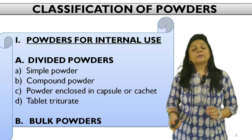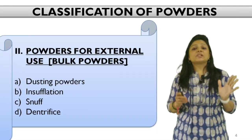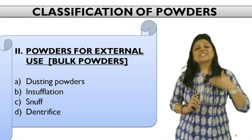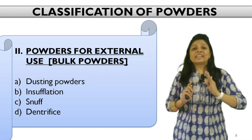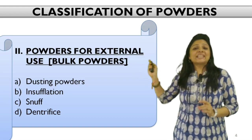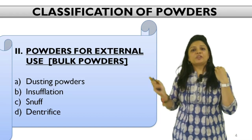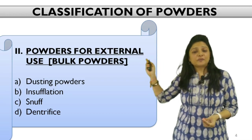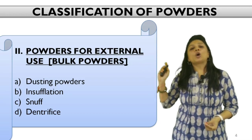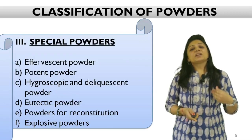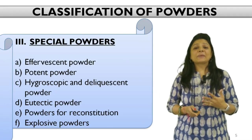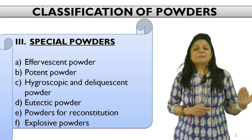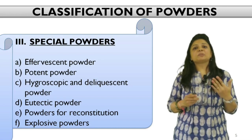There can also be bulk powders for external use. Whenever you have external use powders, they are always supplied in bulk — never in divided form. Bulk powders for external use are of four types: they can be dusting powder, insufflation, snuff, or dentifrice.